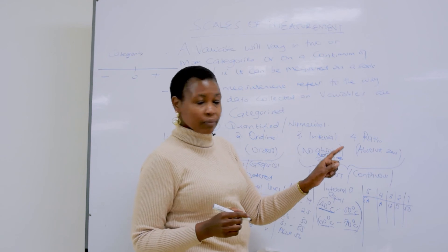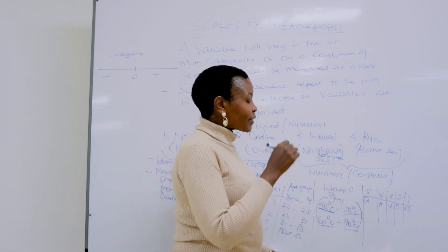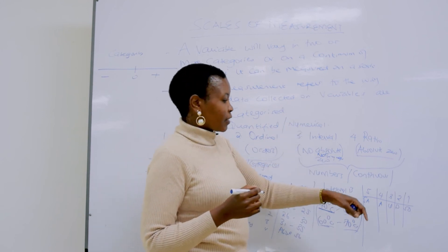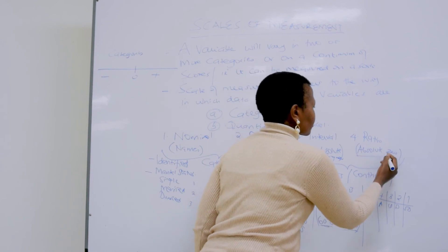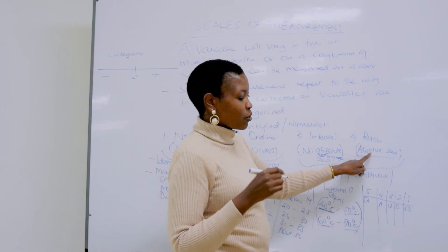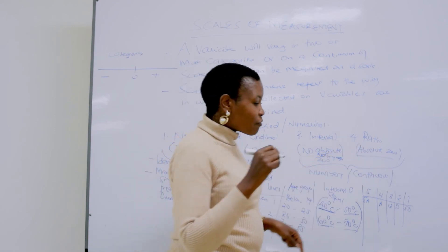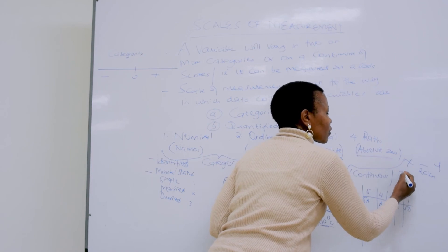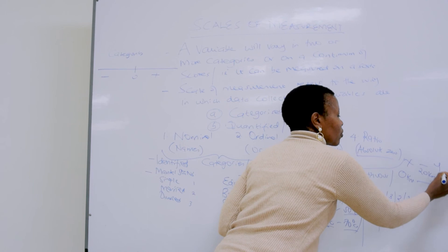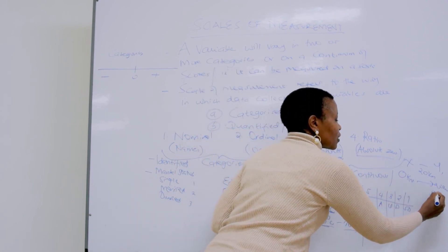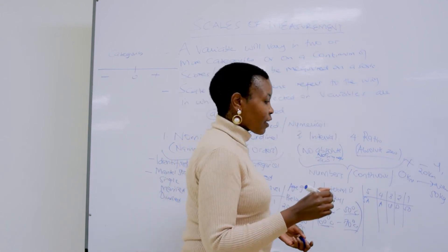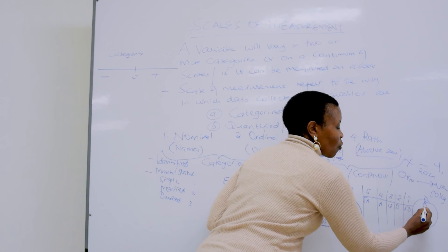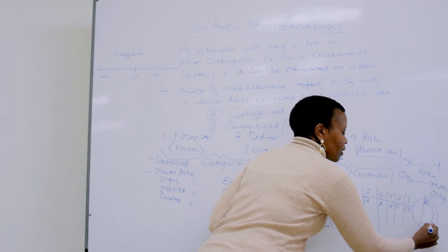When we talk about ratio, ratio variables are those that start from absolute zero, meaning absence of that property. Ratio scale variables have a true zero point. For instance, if you say the distance from X to Y is 20 kilometers, you are starting from zero kilometers and moving 20 kilometers to reach Y. When you say your weight is 50 kilograms, you are stepping on the scale when it is at point zero, and it moves to 50 kg when you step on.